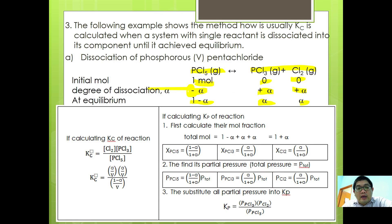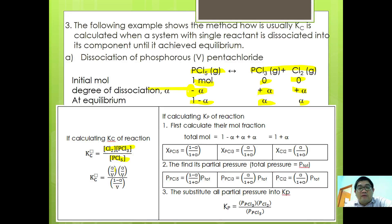Now to calculate Kc of this reaction, it is quite simple. We express Kc as the concentration of Cl2 times PCl3 over PCl5. That gives alpha over volume times alpha over volume, divided by 1 minus alpha over volume. This is how we express Kc.